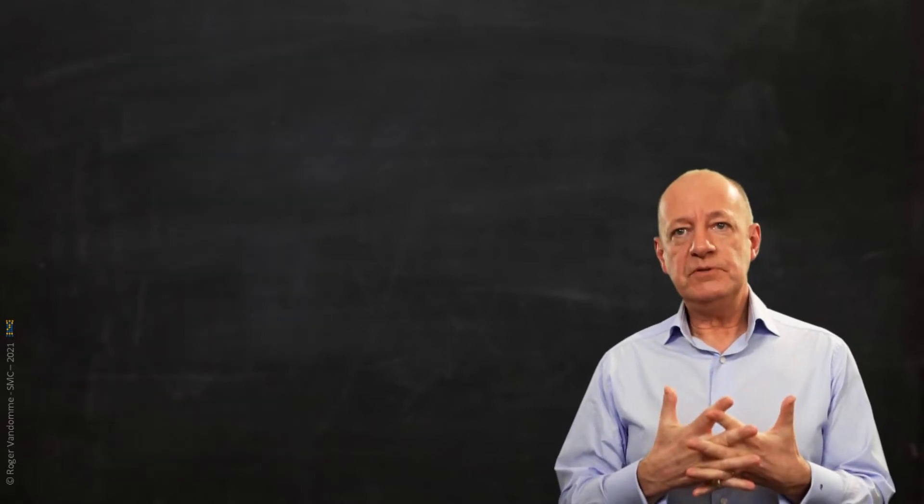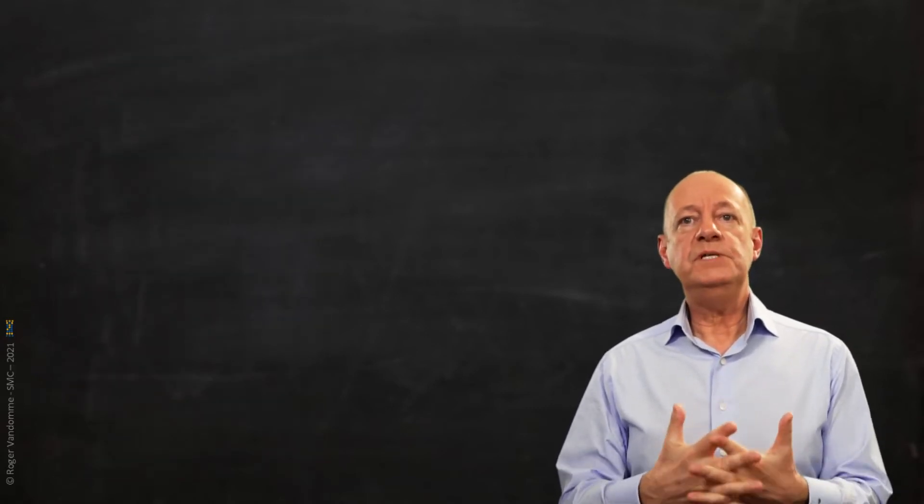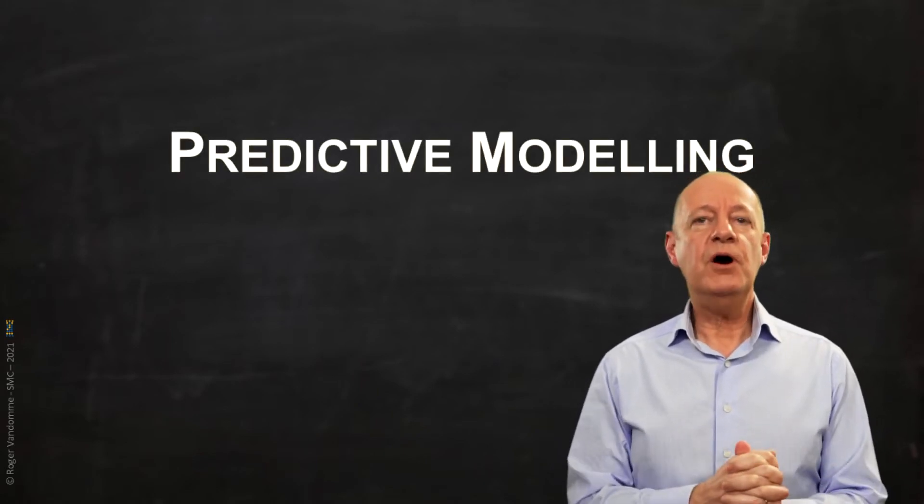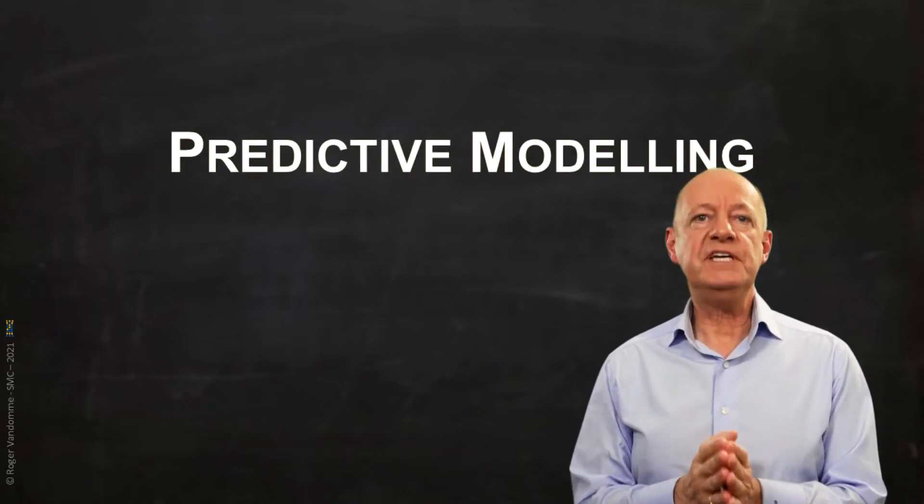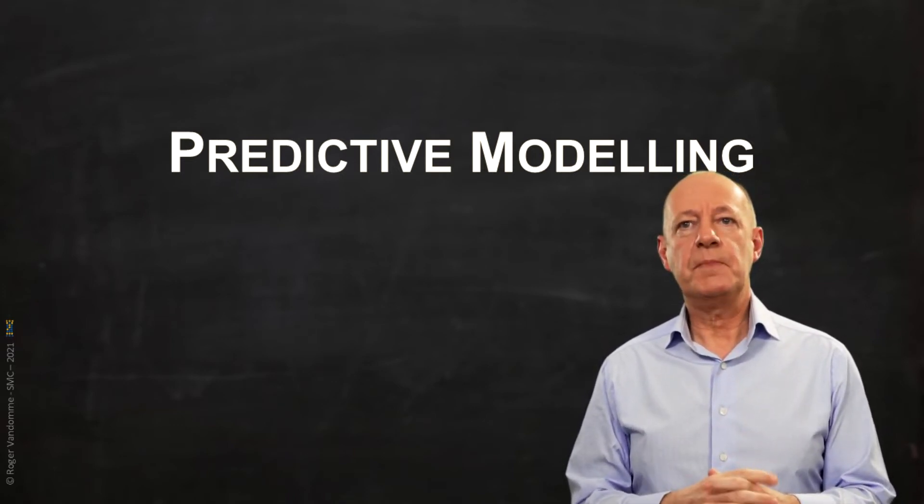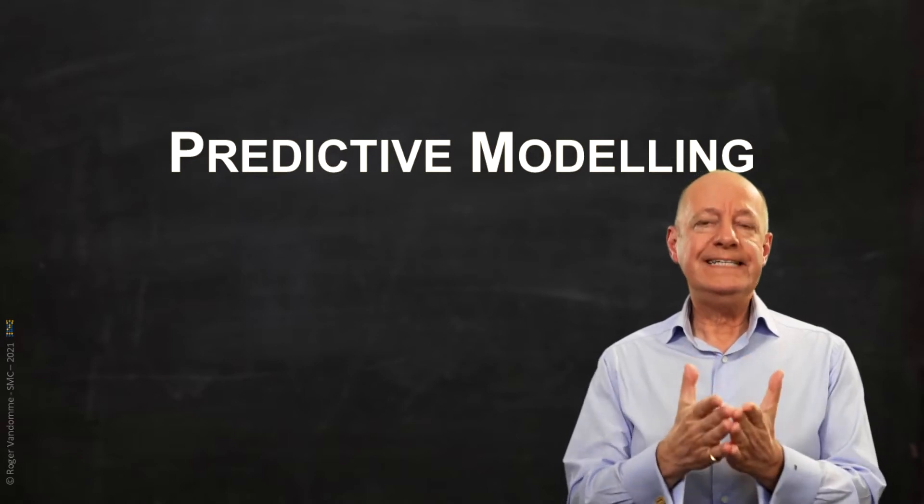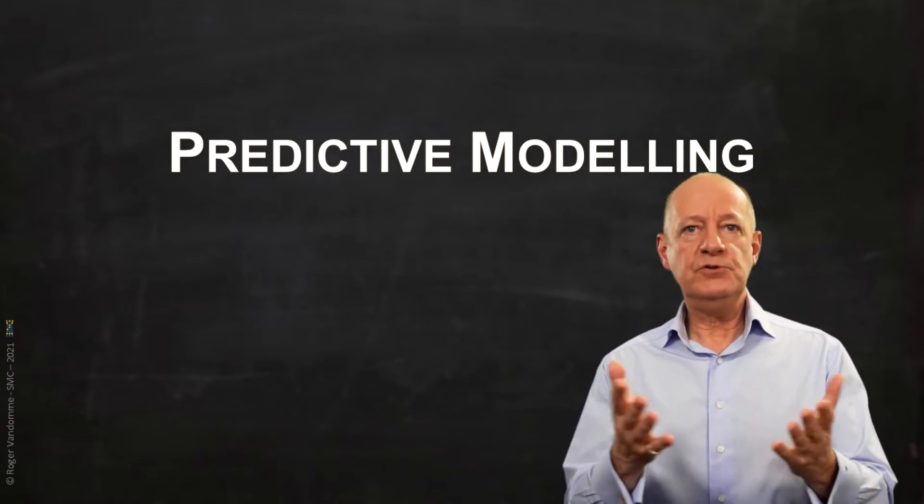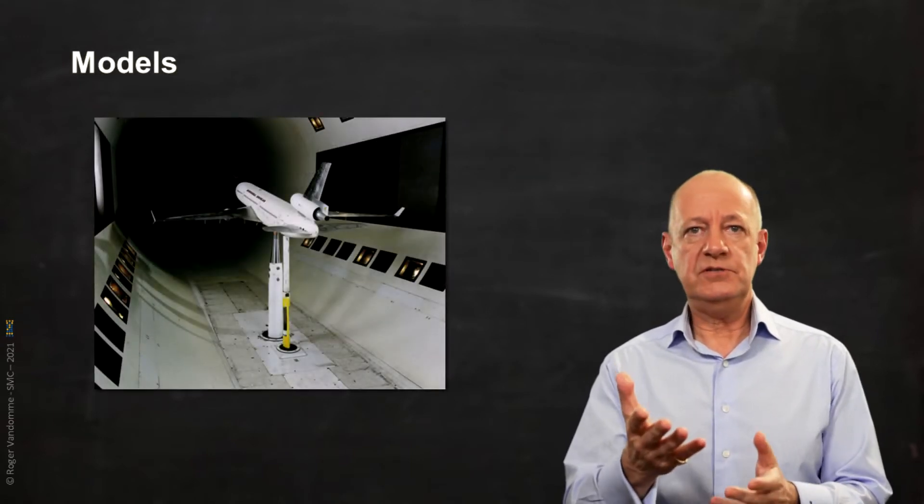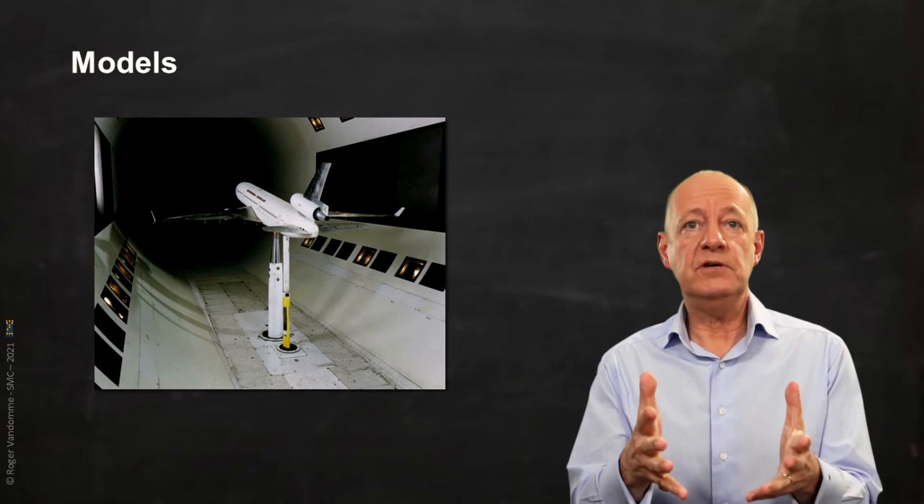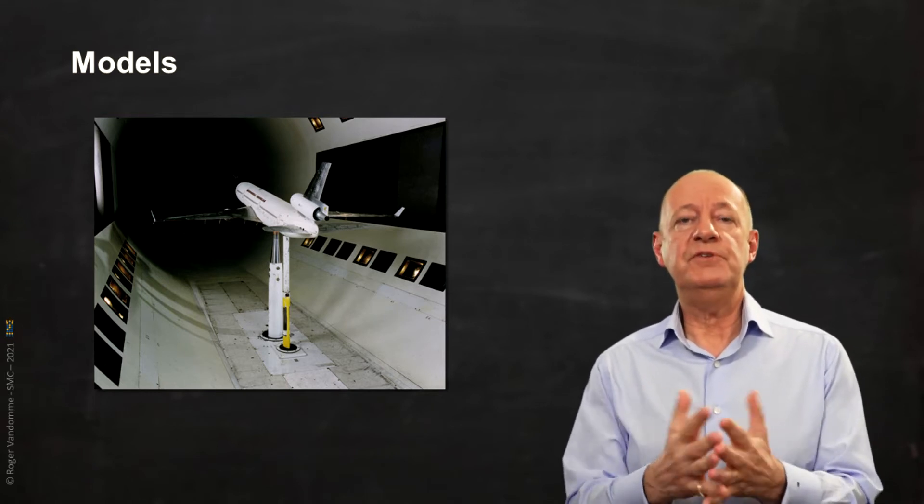These two principles will allow us to build a model. What is a model? A model is a simplification of reality in order to better study and understand it. We will talk about here mathematical models, but keep in mind that there are also physical models, such as the miniature reproduction of an aircraft that is put in a wind tunnel to study its behavior before risking a pilot.